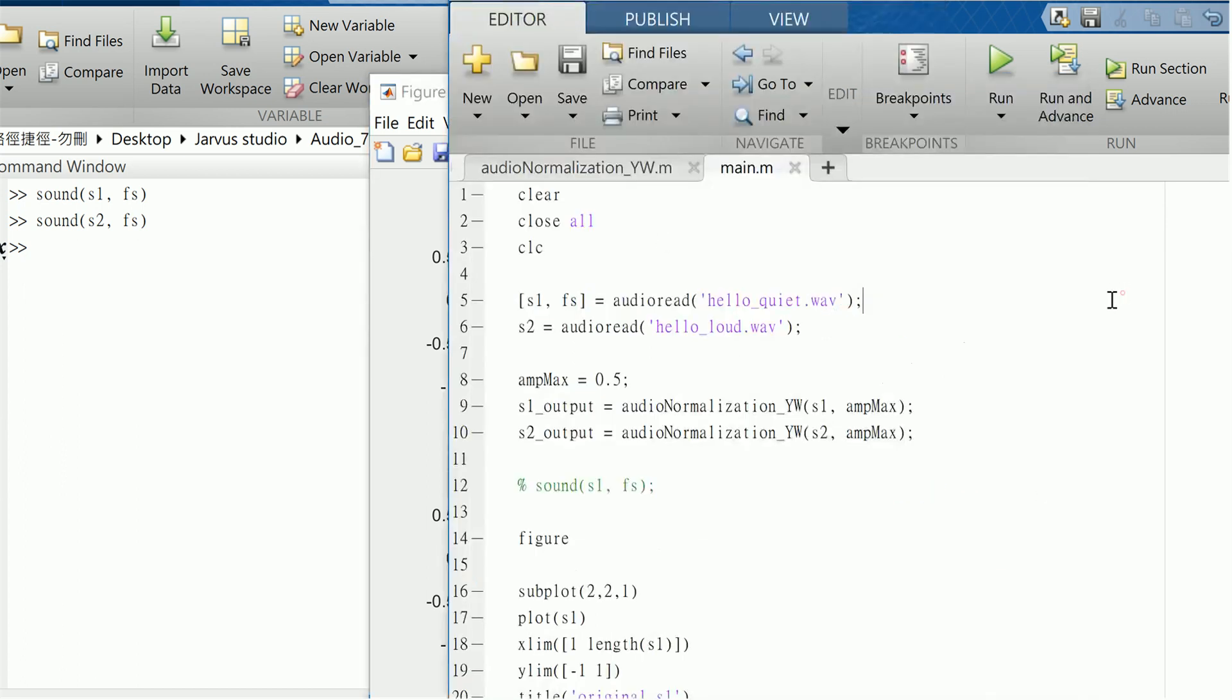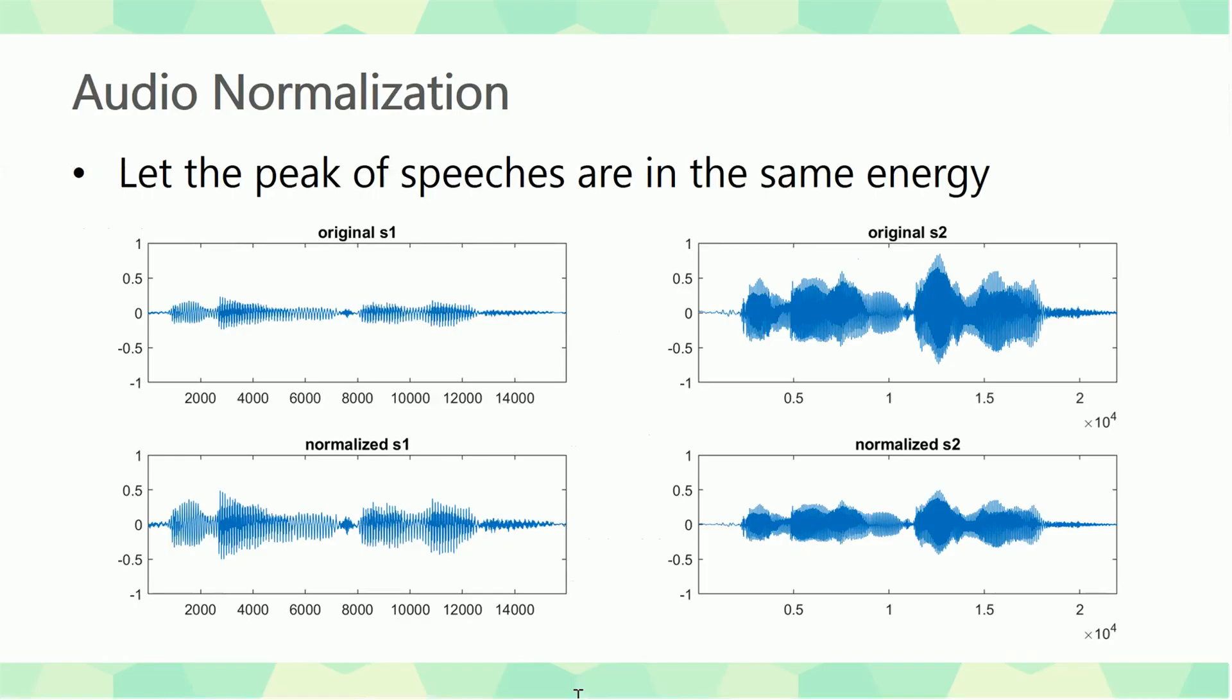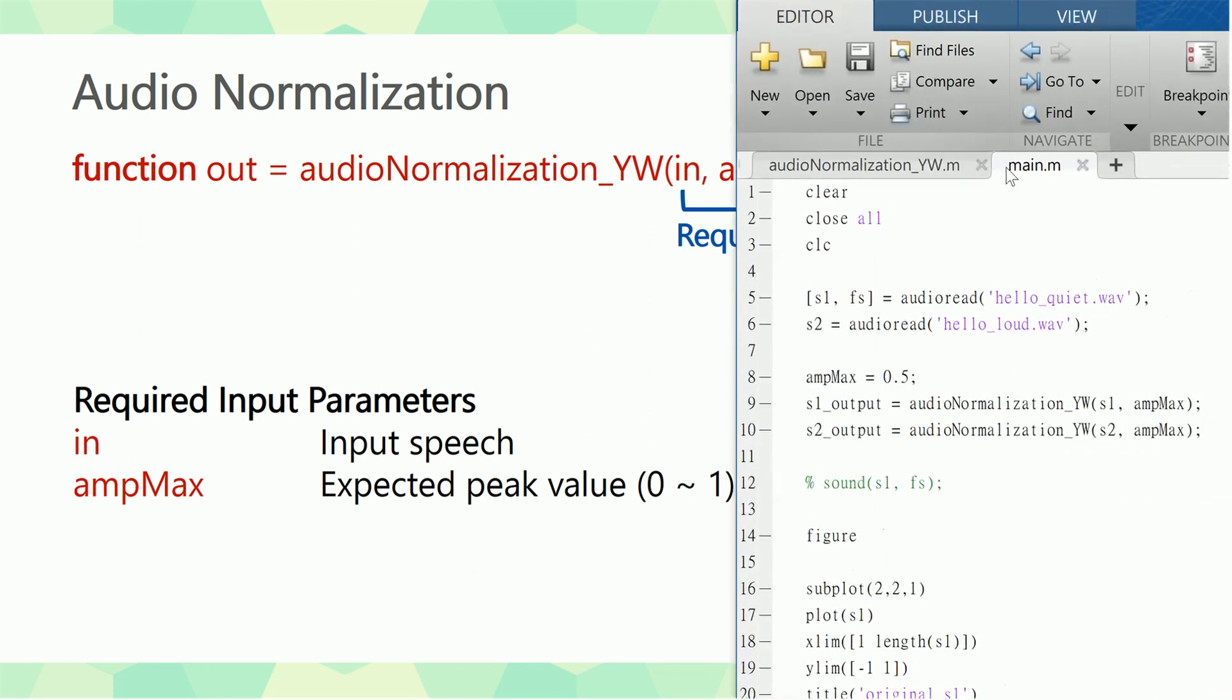So how do we use our function to normalize these two speeches? Our function is very simple. Just use the input speech and we can set a parameter which is our expected peak value. In this example, you can see I use s1 and I set my ampMax to 0.5. Be careful that this value should be between 0 to 1.